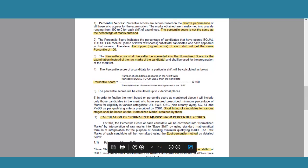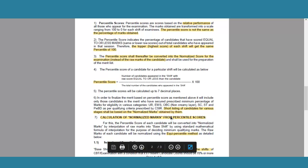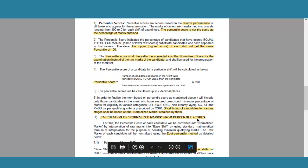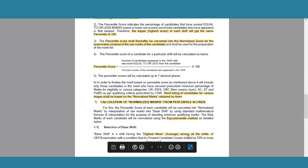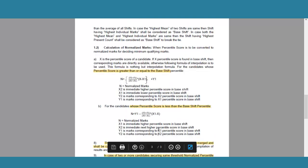Short-listing of candidates will not be done on the percentile score — it will be done on the normalized marks. The normalized marks will be obtained from the percentile score using the equi-percentile method for conversion. You just need to find the highest mean among all the shifts across all days — that is called selection of the base shift. Once you know the highest mean, you can use the formula directly.